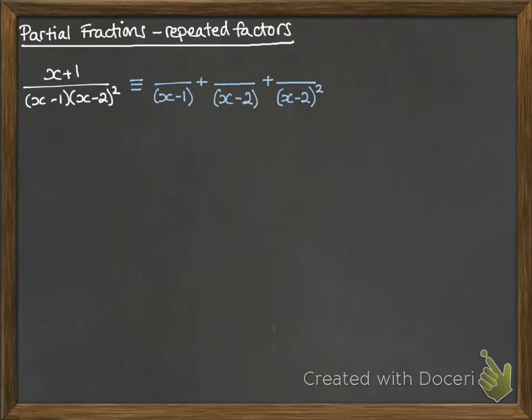We could also have a fraction with x minus 2 that would also count as a factor in x minus 1 and x minus 2 squared. We could have a fraction there, something over x minus 2, that would still go into that denominator.